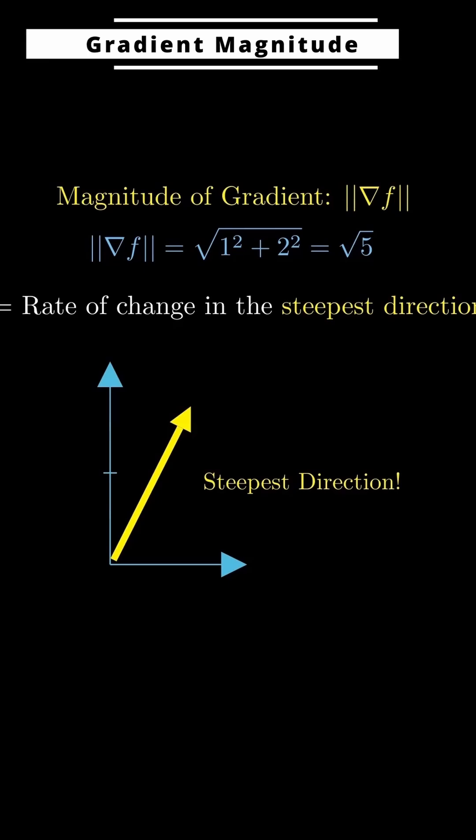For example, this purple line here isn't the gradient. It's just one possible slope of the surface.